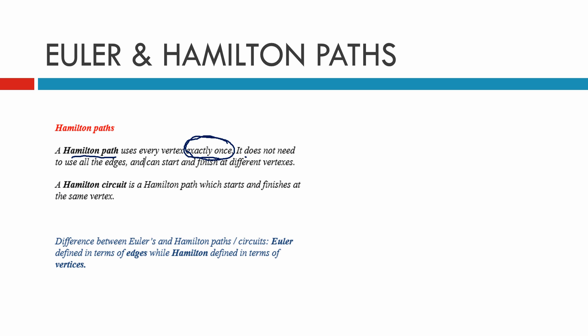The Hamilton circuit, however, just like the Euler circuit, has to start and finish at the same vertex. Here we have the key difference: Euler is defined in terms of edges, Hamilton is defined in terms of vertices. Euler equals edges, Hamilton equals vertices.